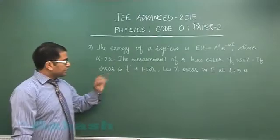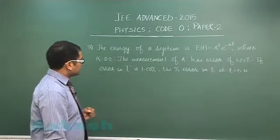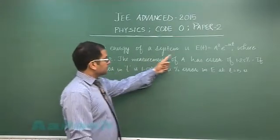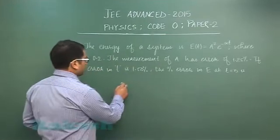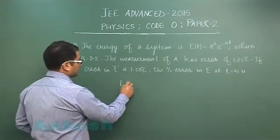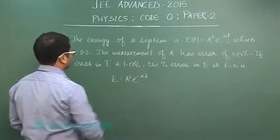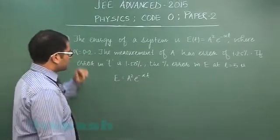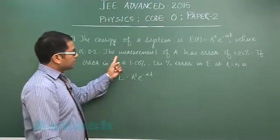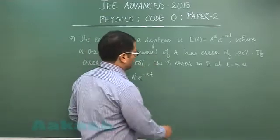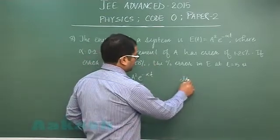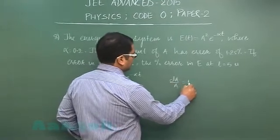Question number eight is from error analysis. It says the energy of a system is given by E = A²e^(-αt) where α is a constant 0.2. The measurement of A has an error of 1.25%, so dA by A is 1.25%.